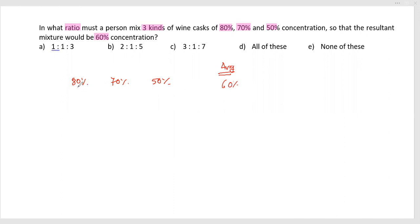80, 70, and 50—when mixing with a specific ratio, will give 60. So it is not a unique solution. Now we need to check because there are three options given. 'All of these' and 'none of these' are mentioned, so we need to check which one will give it.